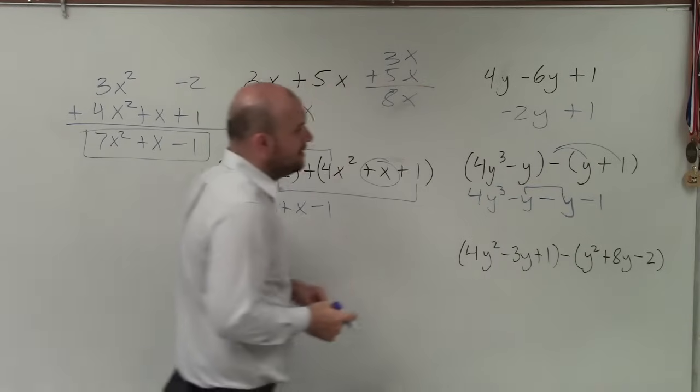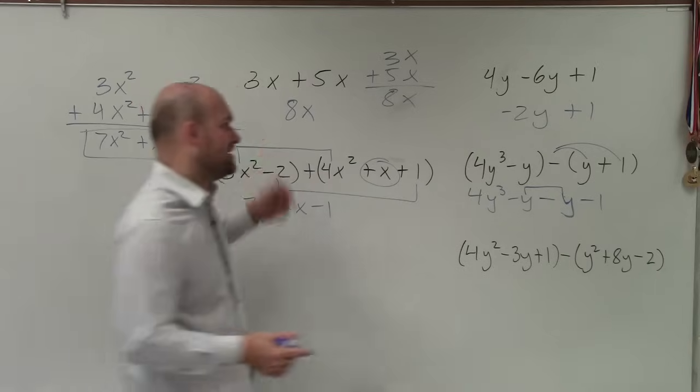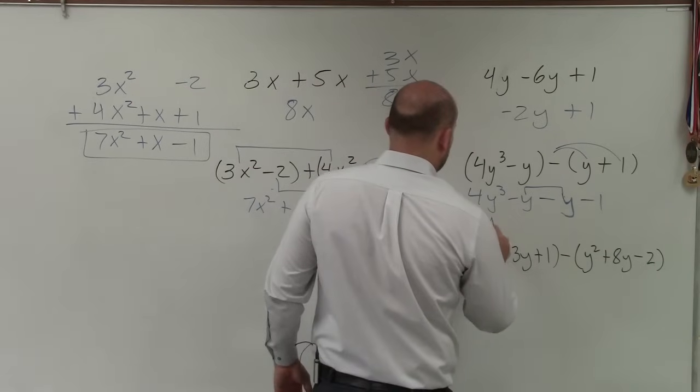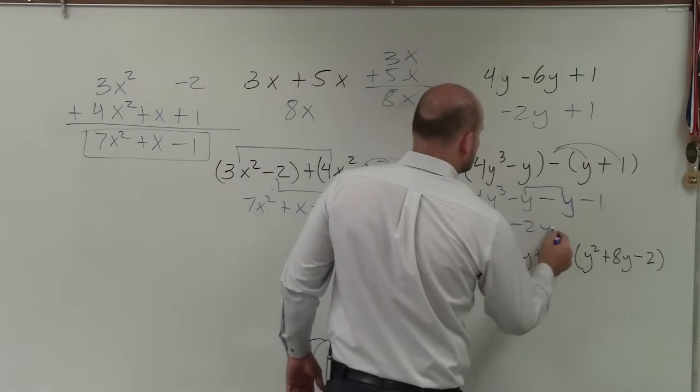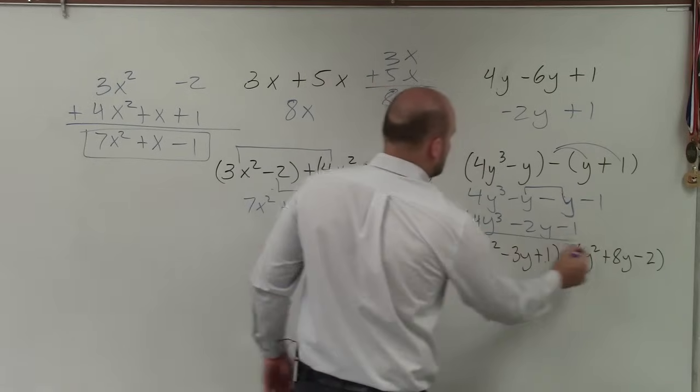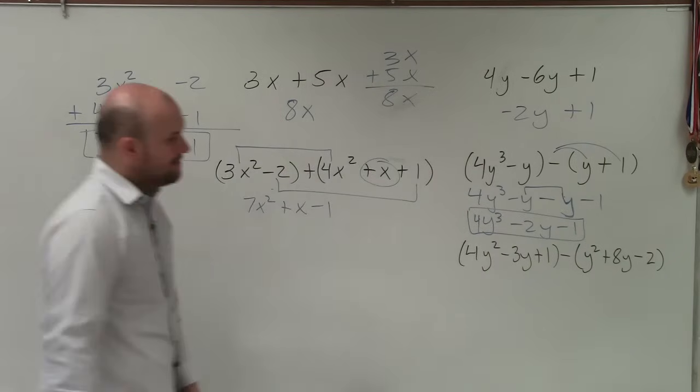Then I just make sure I group my terms together, and I can use just this method. Negative y minus y, and that's negative y minus y is negative 2y. So my final term is 4y cubed minus 2y minus 1. OK, so there you go.